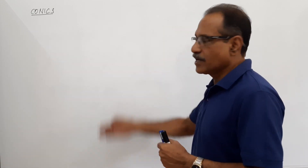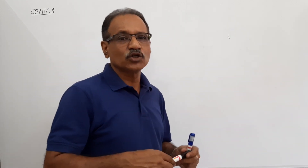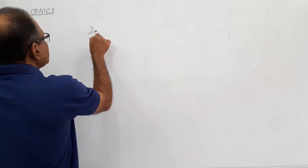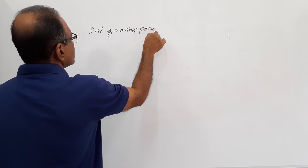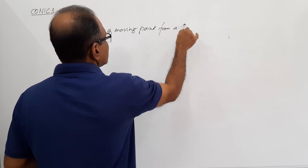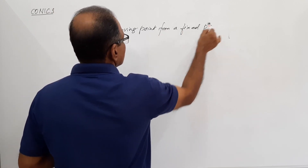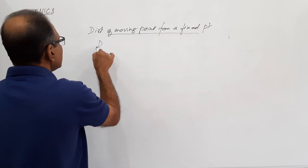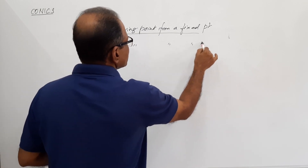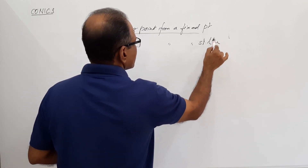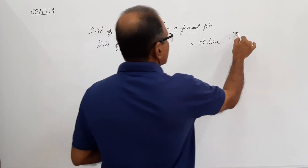A conic curve is defined as the path traced by a point moving in a plane such that the ratio of the distance of the moving point from a fixed point divided by the distance of the same moving point from a fixed straight line remains a constant.